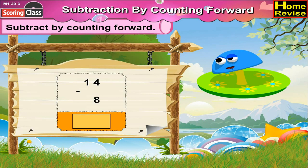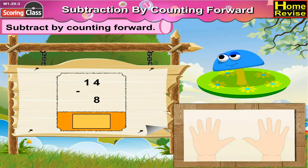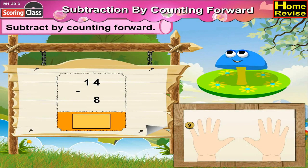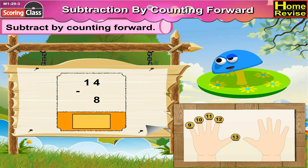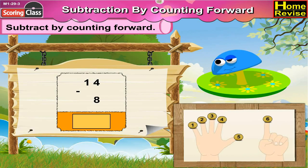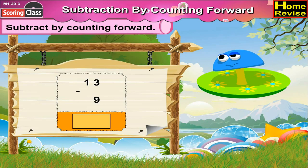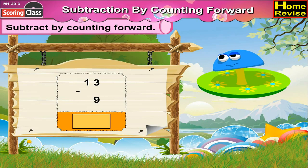14 minus 8 is equal to dash. By counting forward from 8: 9, 10, 11, 12, 13, 14. That is 6 steps. So 14 minus 8 is equal to 6.